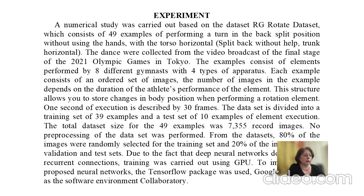The examples consist of elements performed by eight different gymnasts with four types of apparatus. Each example consists of an ordered set of images. The number of images in each example depends on the duration of the athlete's performance of the element. The structure allows storing changes in body position when performing a rotation element; one second of execution is described by 30 frames. The dataset is divided into a training set of 39 examples and a test set of 10 examples, with a total dataset size of 745 record images.